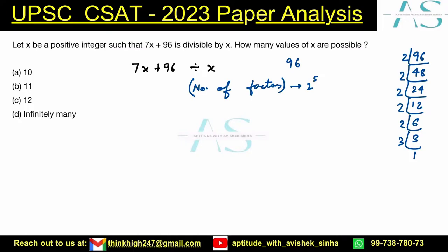So what is the number of factors? Add 1 to each power and take their product: (5+1) × (1+1) = 6 × 2 = 12.